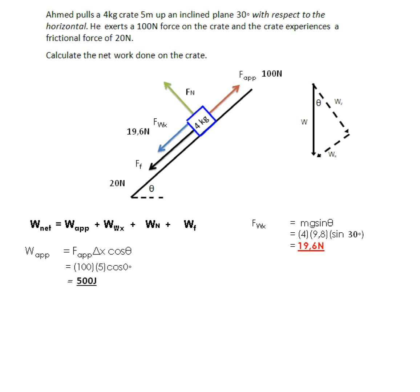The work done by the frictional force equals F_friction × Δx × cosθ. The force of friction is 20 newtons, the distance is 5 meters, and the angle is 180 degrees because friction acts opposite to the direction of motion — the box moves up the slope while friction acts down. This gives us minus 100 joules. The work done by the normal force is zero joules because the force is perpendicular to the slope and cos 90° equals zero.